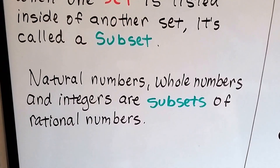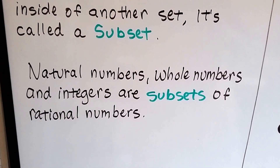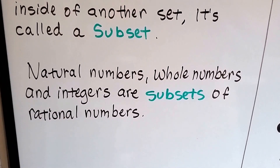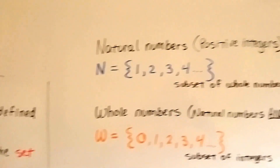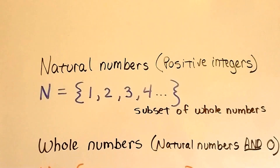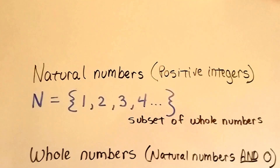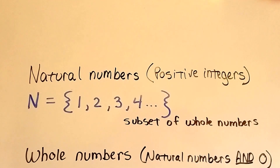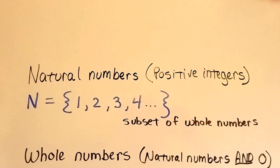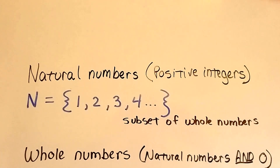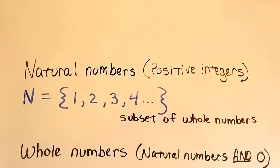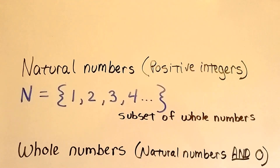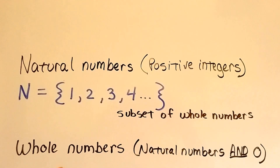Natural numbers, whole numbers, and integers are subsets of rational numbers. The natural numbers are positive integers — that would be 1, 2, 3, 4, 5, 6 — and it would just be the numbers that continue up from there, getting larger and larger into infinity.